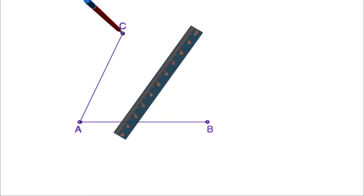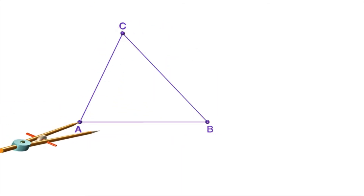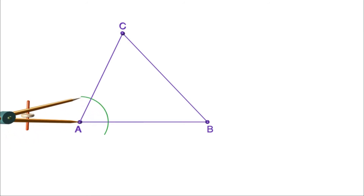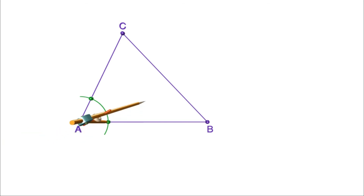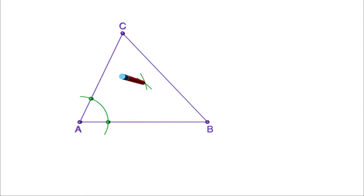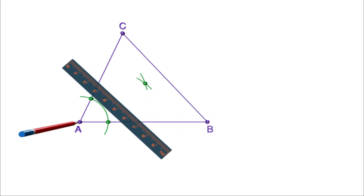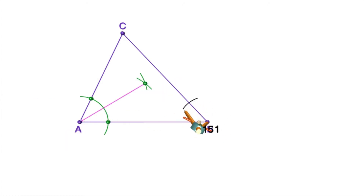Now we have to draw the bisectors of all three angles. Let me first draw the bisector of angle A. Put the compass at A and draw an arc. Mark the points of intersection of this arc with the sides of the angle. From these points, draw arcs of the same radius. Mark the point of intersection of these arcs and join it to A. This is the bisector of angle A.